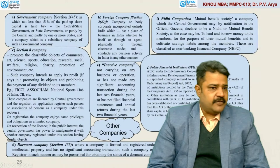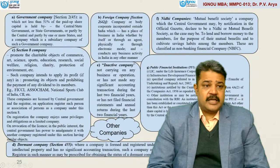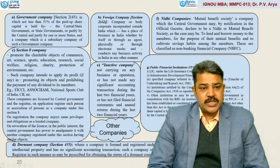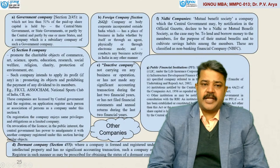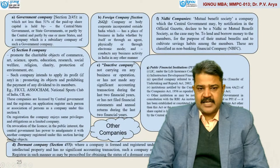Other types of companies include government company, defined in Section 2, Subsection 45, in which not less than 51% of the paid-up share capital is held by the central or state government or governments, or partly by center and partly by one or more states, and includes a company which is a subsidiary of such government companies. Foreign company is defined in Section 2, Subsection 42 — a company or body corporate incorporated outside India which has a place of business in India, whether by itself or through an agent, physically or through electronic mode, and conducts any business activity in India in any other manner.